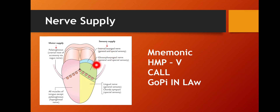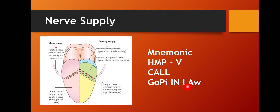The posterior one-third is supplied by the glossopharyngeal nerve and the internal laryngeal nerve. To remember this, use GOPINL — GO-PI stands for glossopharyngeal, and NL stands for internal laryngeal. In this way you can remember the nerve supply of the posterior one-third of the tongue.